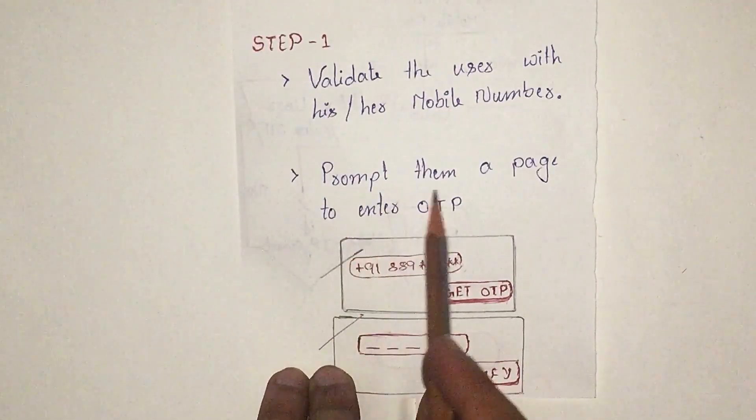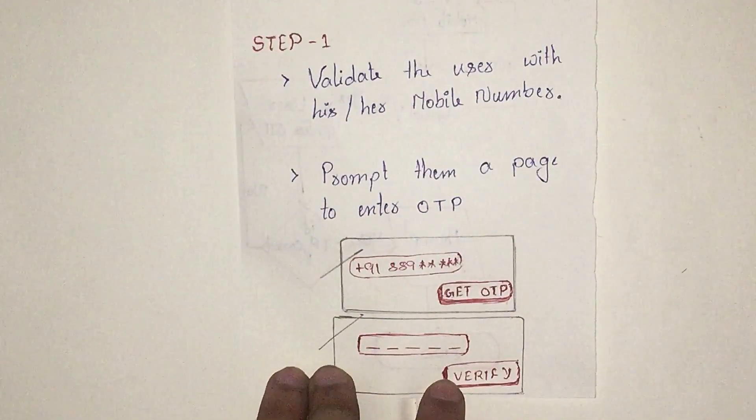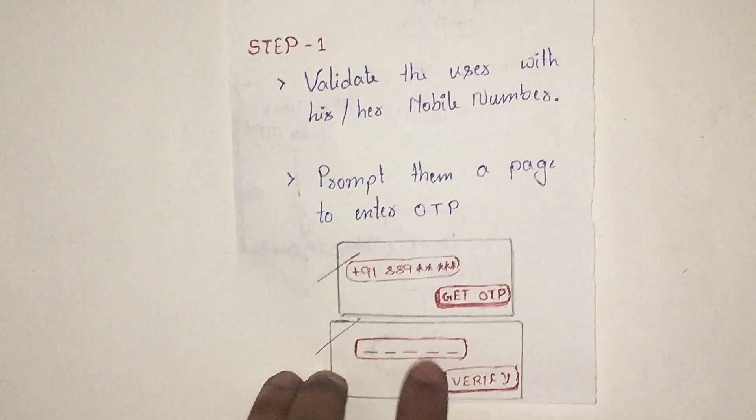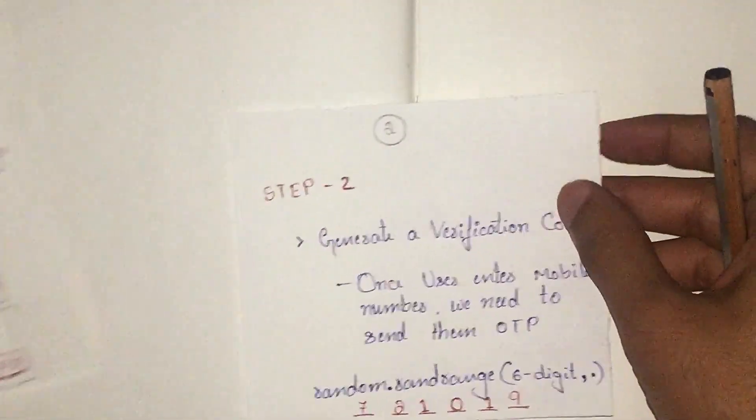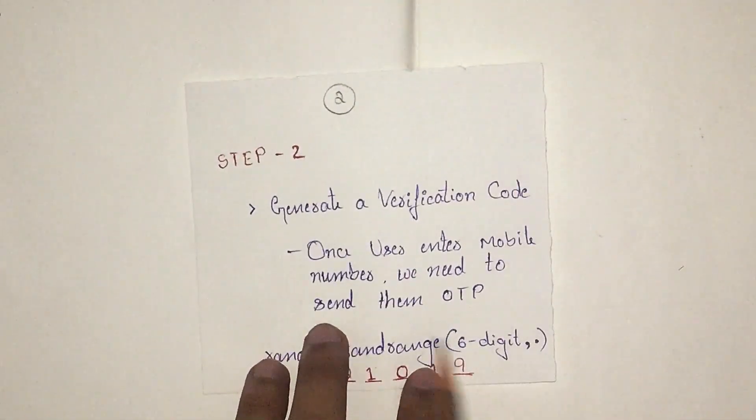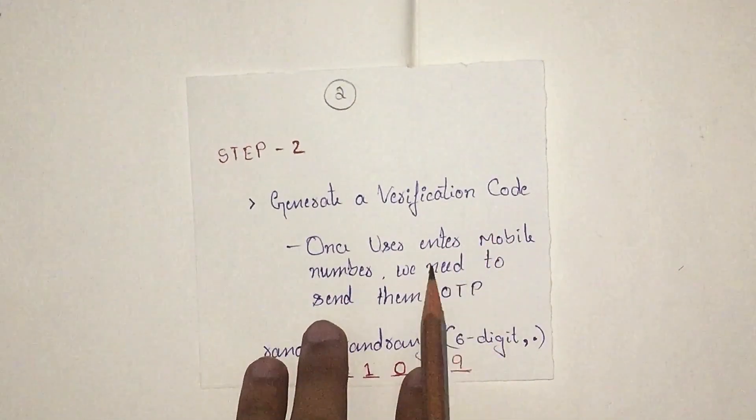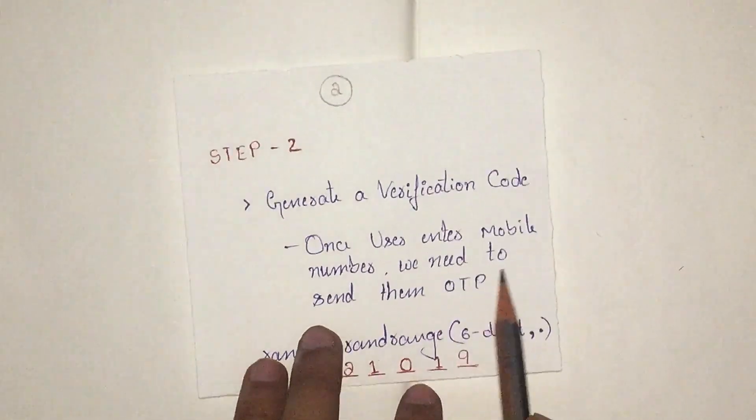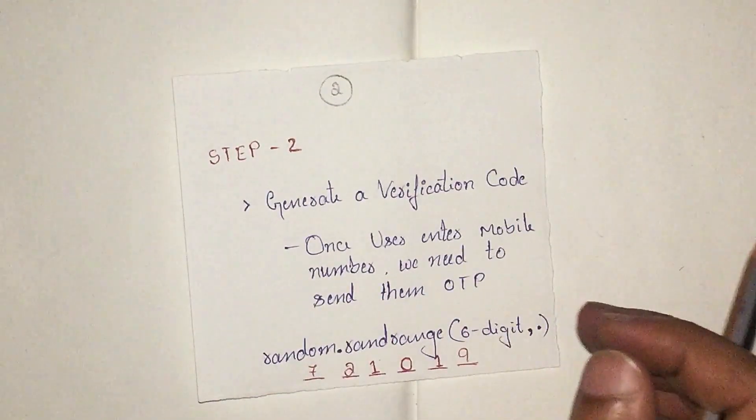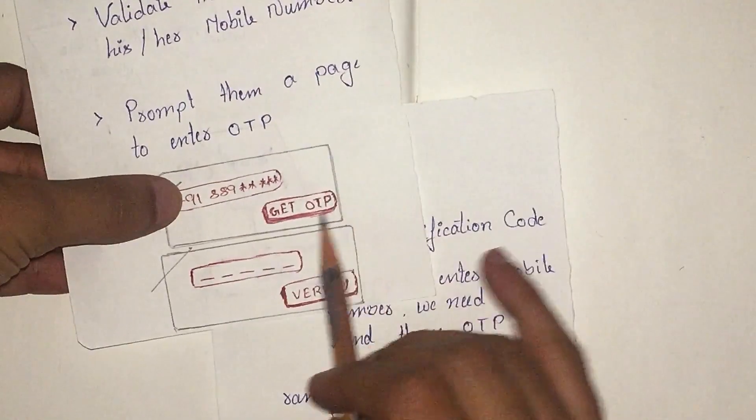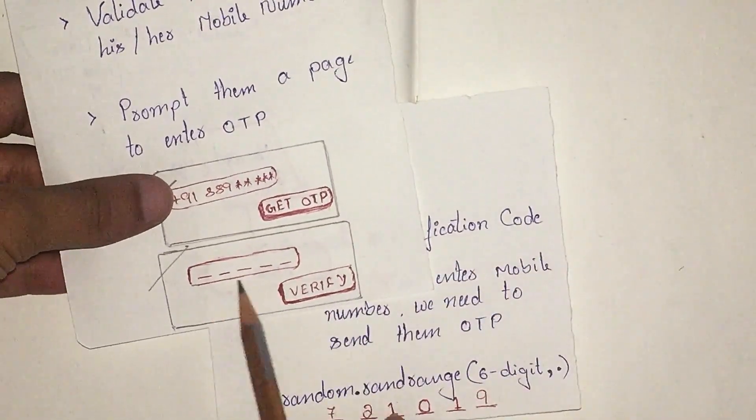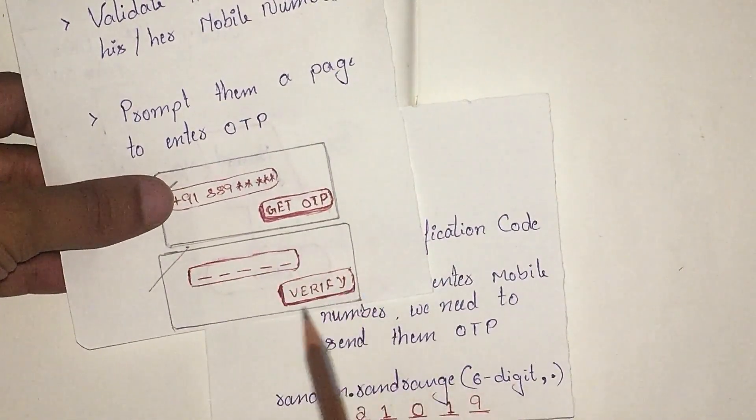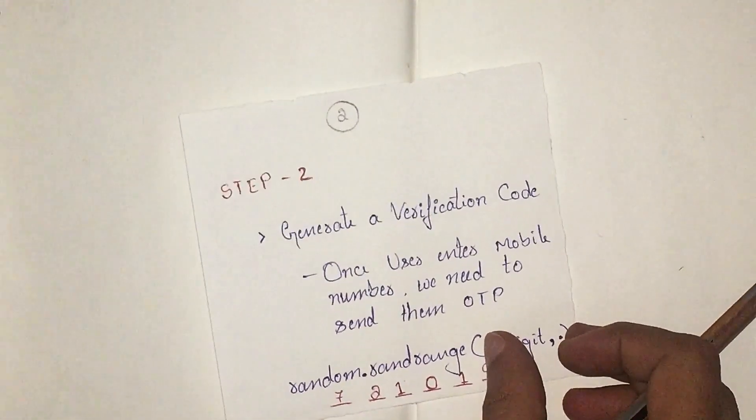Step 2 talks about generating a verification code. How do we generate this verification code? Once the user enters mobile number and clicks on get OTP, we need to prompt this page. In this process, we need to trigger and generate a verification code.